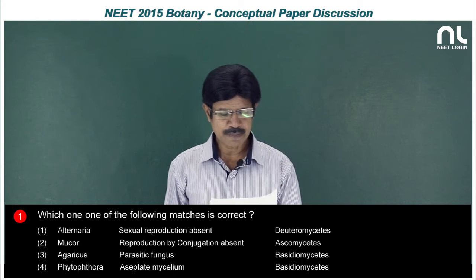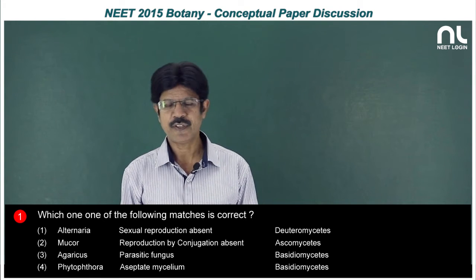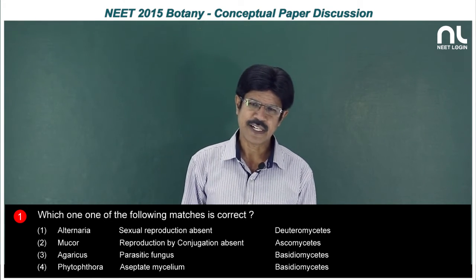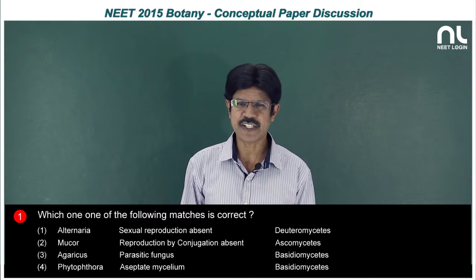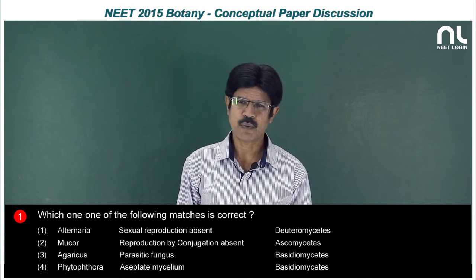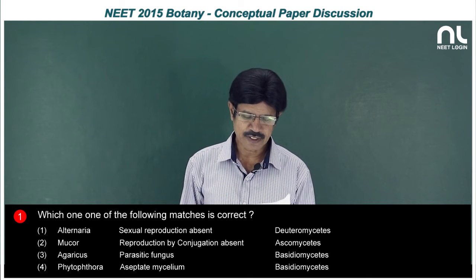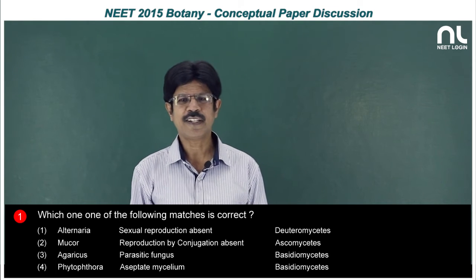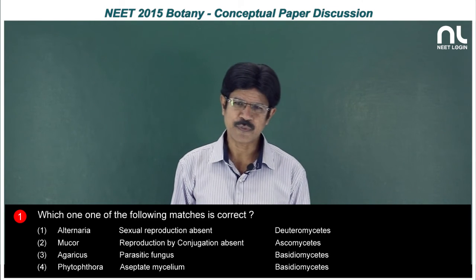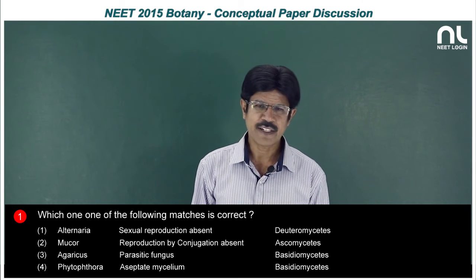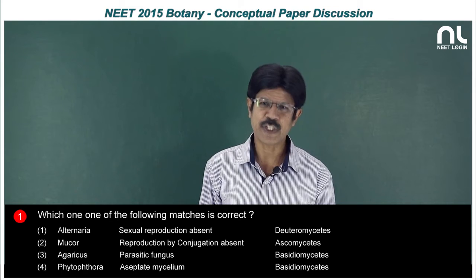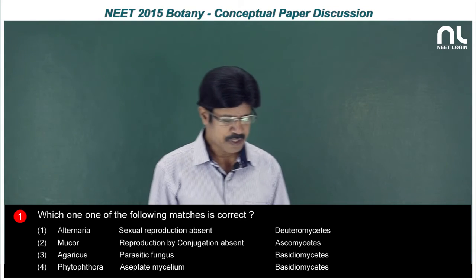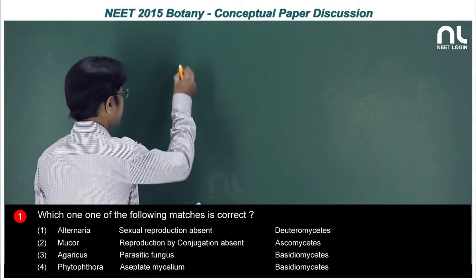The fourth option — Phytophthora, aseptate mycelium, Basidiomycetes — is wrong. Phytophthora belongs to Phycomycetes and has aseptate, multinucleate (coenocytic) mycelium. This Phytophthora causes late blight of potato and caused the great famine in Europe. The correct and right option is the first answer.